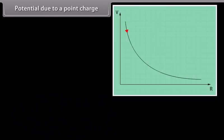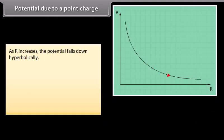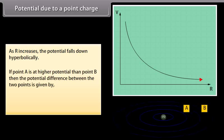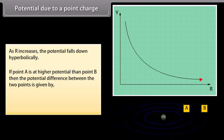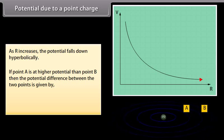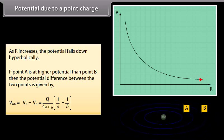We can show in the graph that as R increases, the potential falls hyperbolically. If point A is at higher potential than point B, then the potential difference between the two points is given by V_AB equals V_A minus V_B. Substituting the values of V_A and V_B, we get V_AB equals Q over 4π ε₀ multiplied by (1/A minus 1/B).